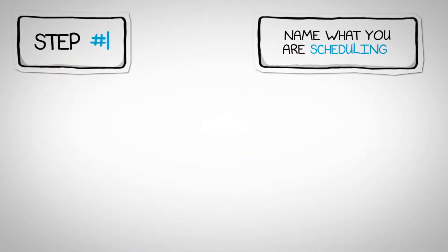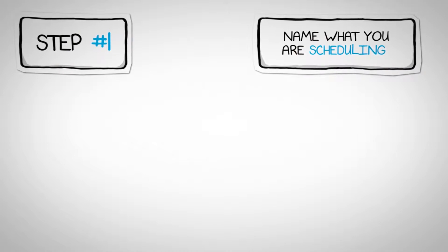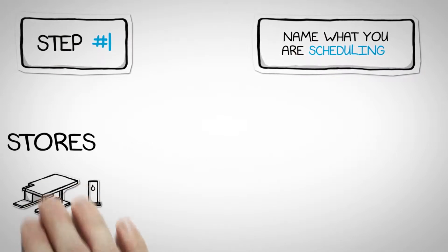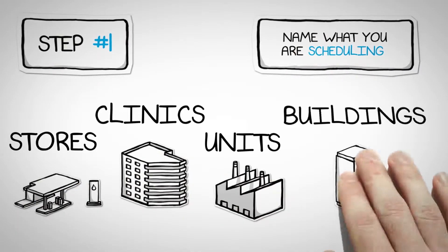In step one, input a name for the physical places that you are creating your eSchedules for. This could be stores, clinics, units, buildings, etc.